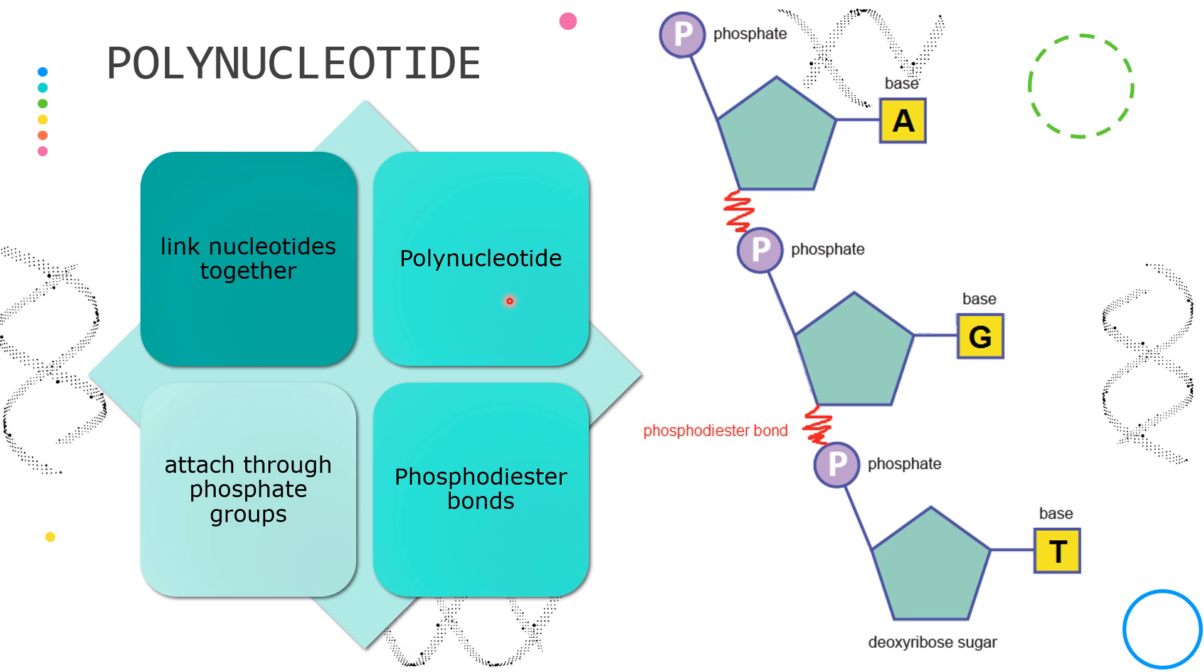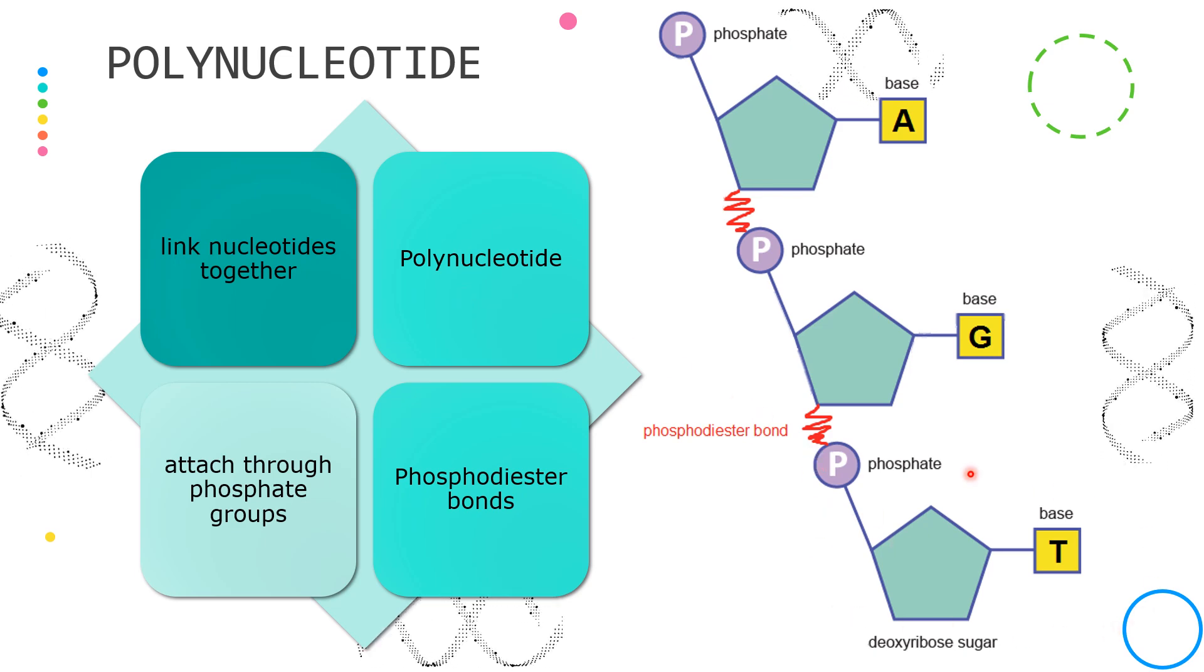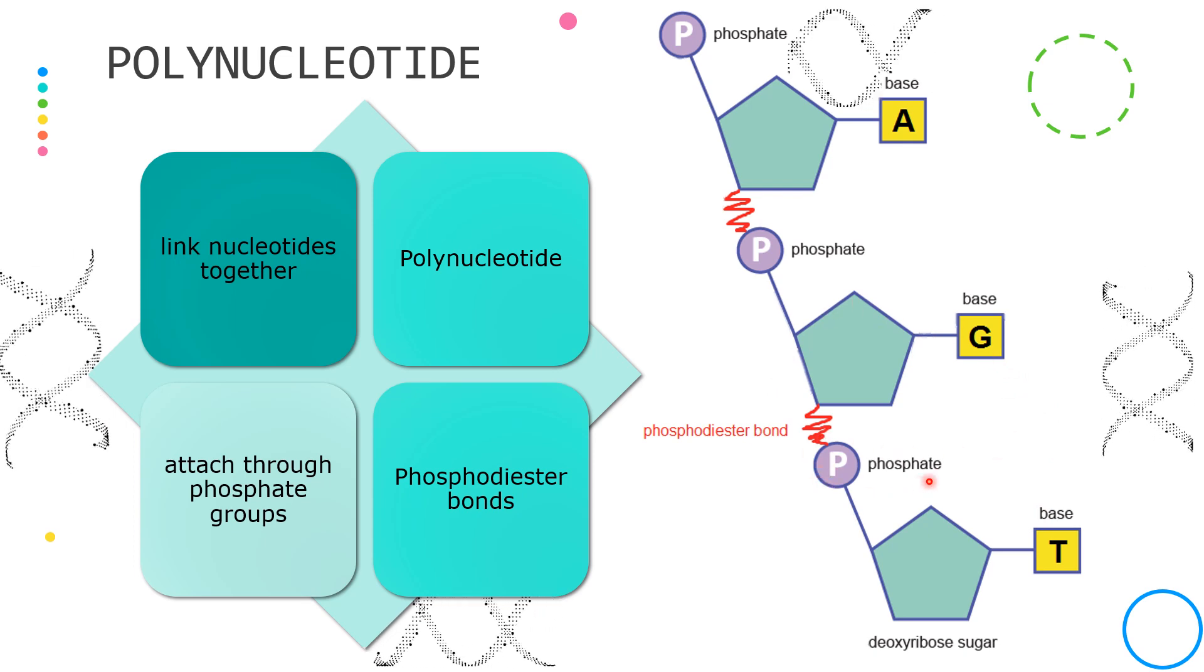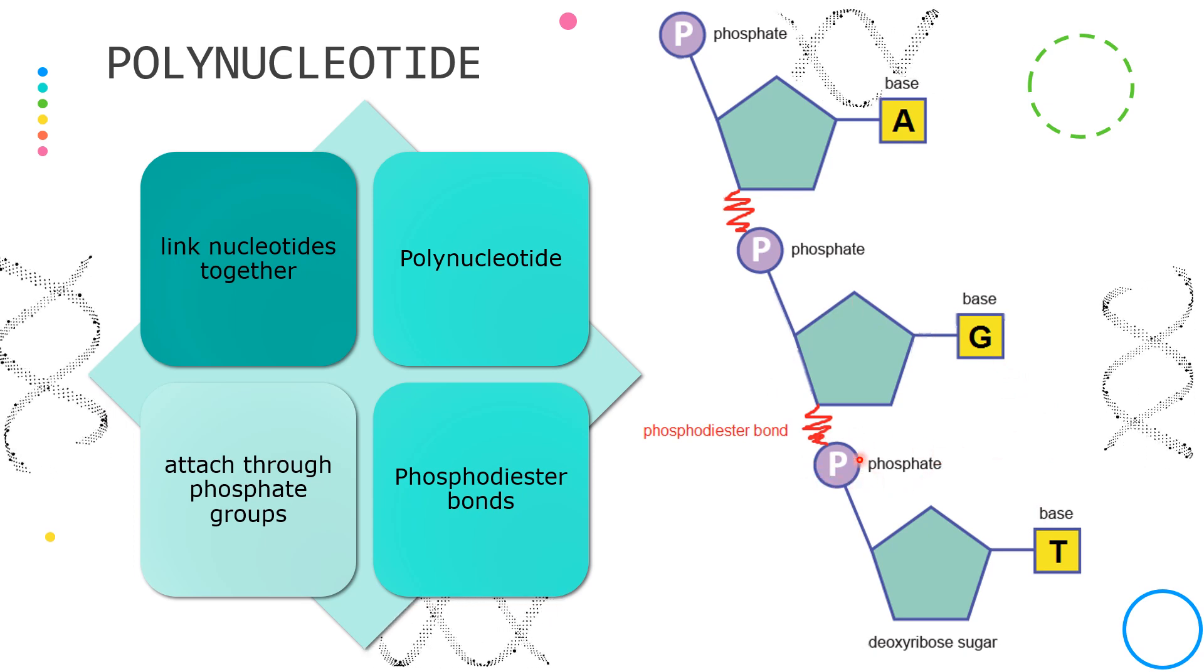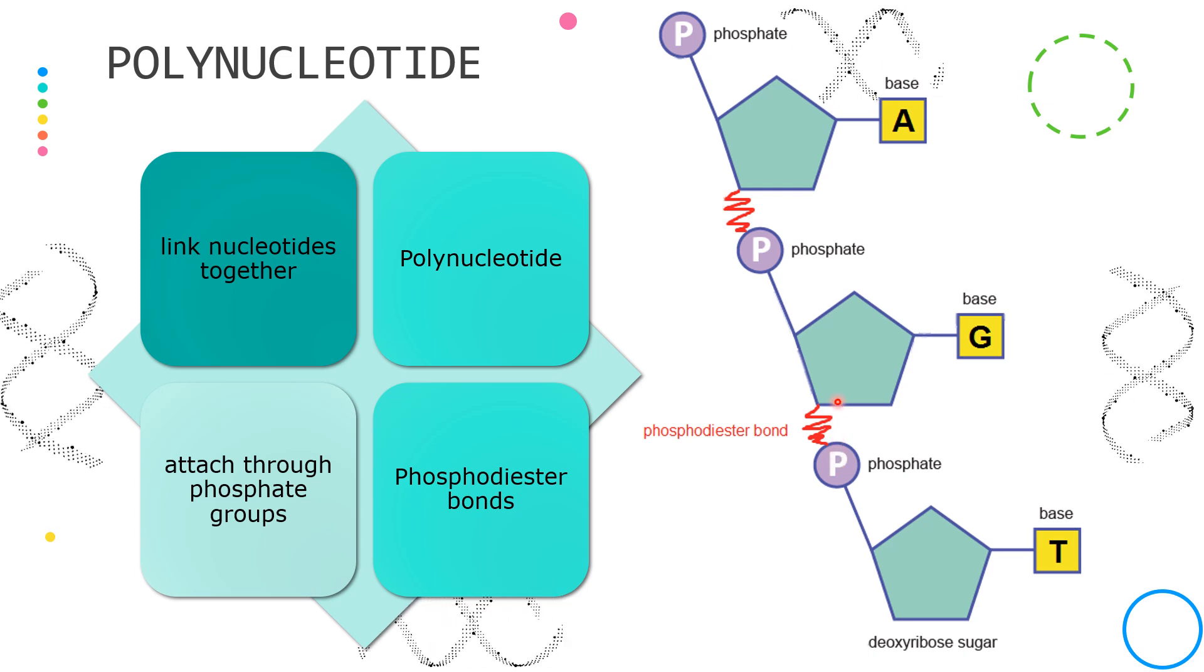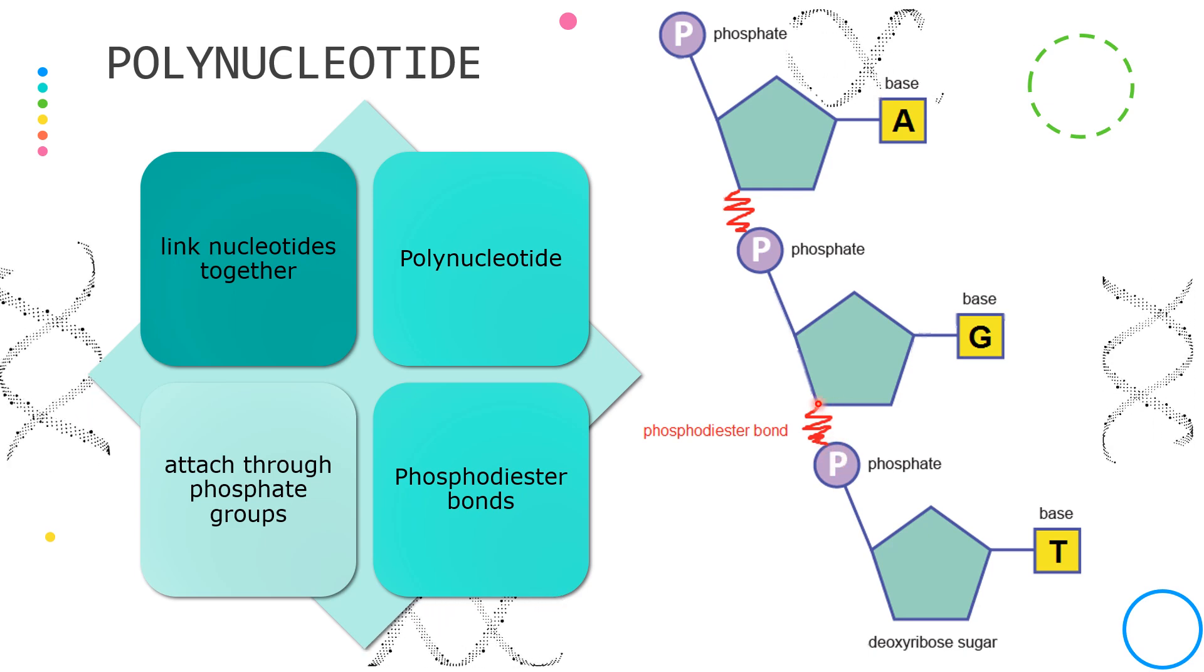This is formed by attaching one nucleotide to another nucleotide through the phosphate groups. The linkage between the nucleotides in a polynucleotide is called a phosphodiester bond.